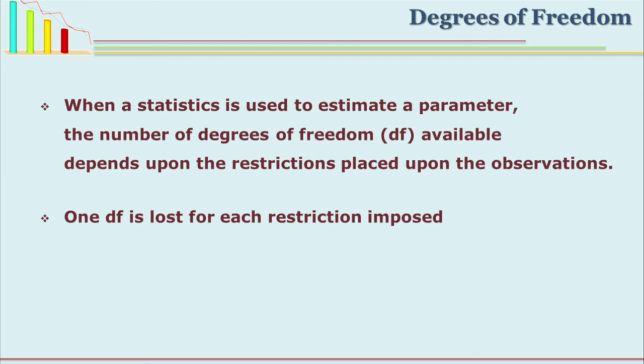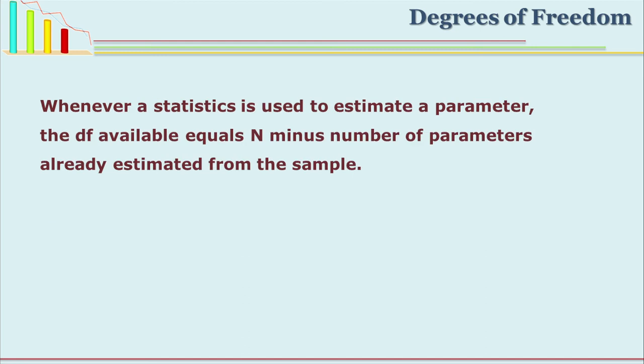There is one more concept we must know while using statistics and conducting inference — that is degrees of freedom. If you see the statistical table, in the first column you have degrees of freedom. Degrees of freedom is the freedom given to you to infer or interpret. When a statistic is used to estimate a parameter, the number of degrees of freedom, denoted as df, depends upon the restrictions placed upon the observations. One df is lost for each restriction imposed. Whenever a statistic is used to estimate a population, df equals n minus 1, where n is the total number and one restriction is generally placed.